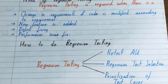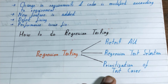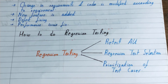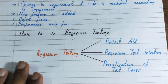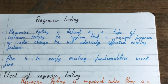The third technique is prioritization of test cases. You make a set of test cases, prioritize them, and determine that if these five or six test cases pass, the software can be considered okay; if not, the software is not okay. This was all about regression testing.